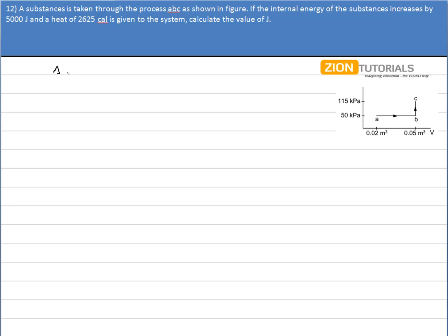The change in internal energy is given as 5000 J, and the heat, delta Q, is given as 2625 calories, or it can be written as 2625 J.